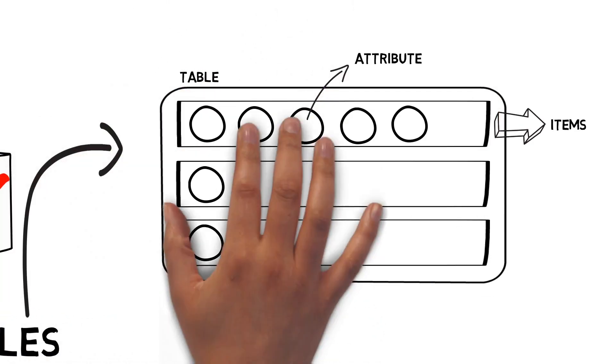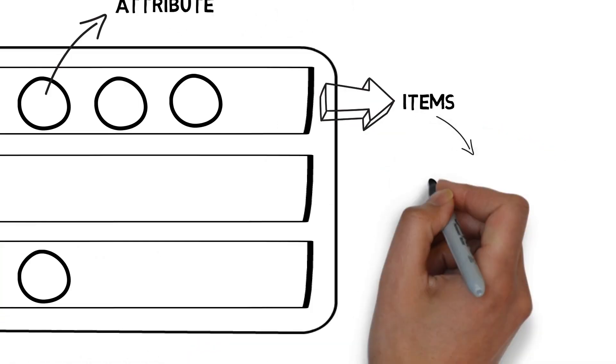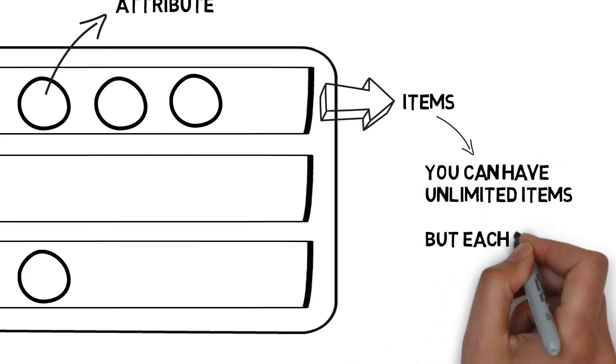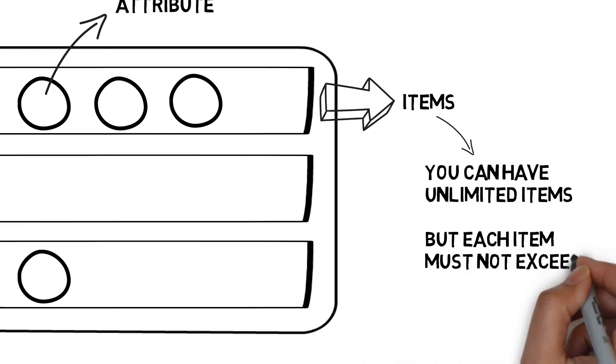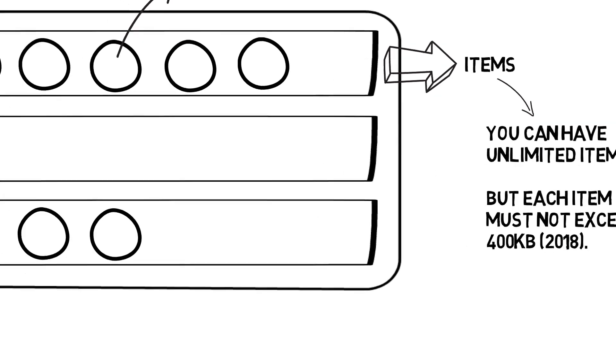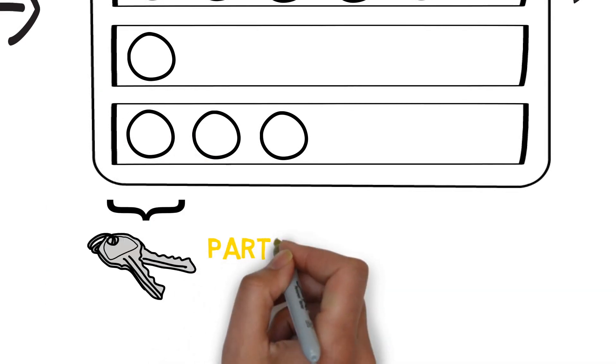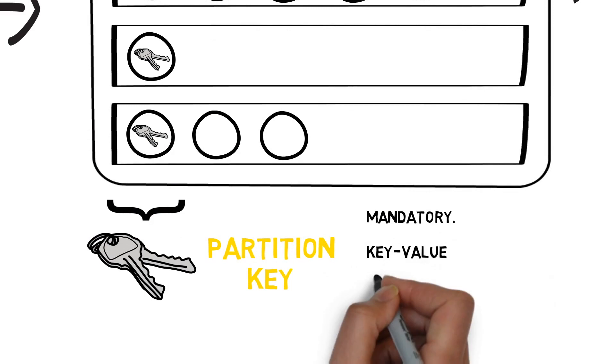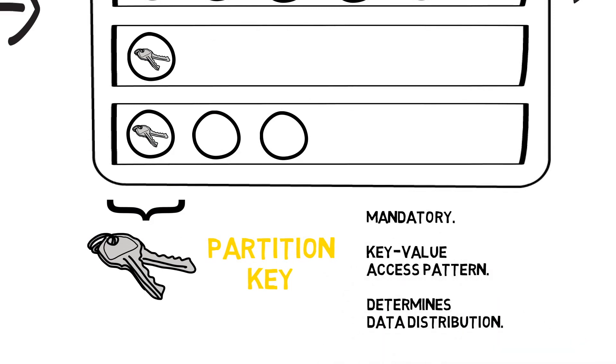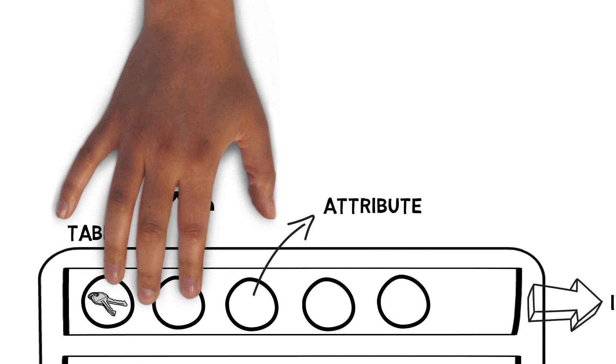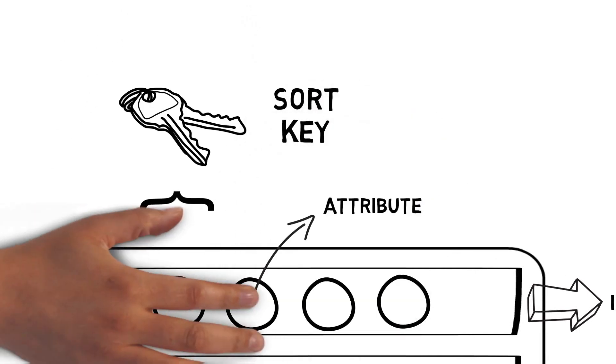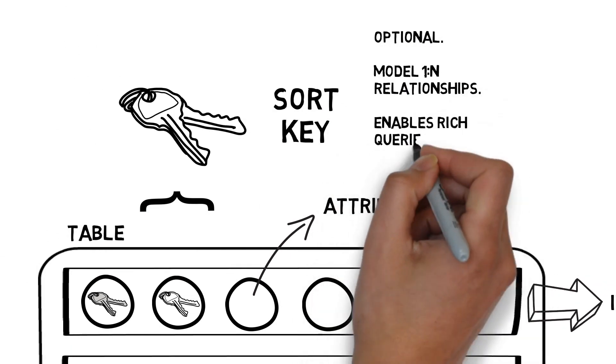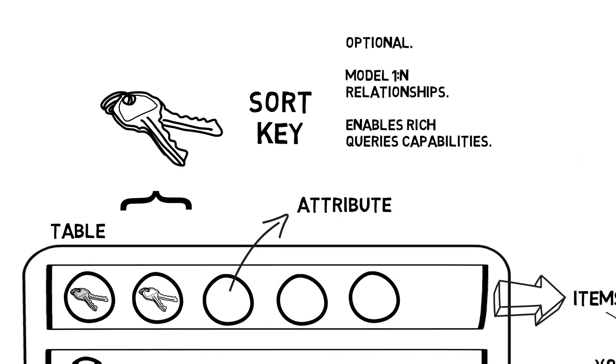A table can store an unlimited amount of items, but the maximum size of an item cannot exceed 400 kilobytes. Each table must have a partition key. It's mandatory. It has a key value access pattern which determines data distribution. We can also have an optional sorting key, which provides a one-to-many relationship and enables richer querying capability.